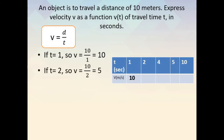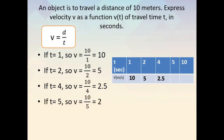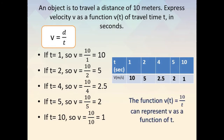If t is equal to 2 seconds, then v is equal to 10 over 2, so the velocity is 5 meters per second. If t is equal to 4, then v is equal to 10 over 4, so the velocity is 2.5 meters per second. If t is equal to 5, then the velocity is equal to 10 over 5, which is 2 meters per second. If t is equal to 10 seconds, then v is equal to 10 over 10, or 1 meter per second. The function v of t is equal to 10 over t can represent v as a function of t.